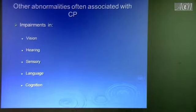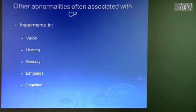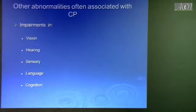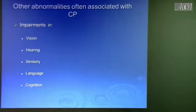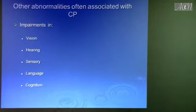Cerebral palsy is not the end of your workup — you need a lot more surveillance. Send them to an eye doctor to assess vision, send them for hearing assessment, and for language evaluation and speech therapy if needed. Sometimes assess cognition as well. Some kids with diplegia are very smart; others are intellectually disabled — you need to be aware of the overall status of the patient.